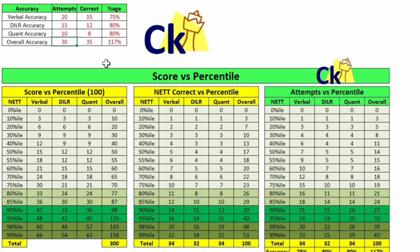The overall attempt will give you the total. Obviously the total is going on. This will be the total and my correct score. So this will tell my overall percentile.